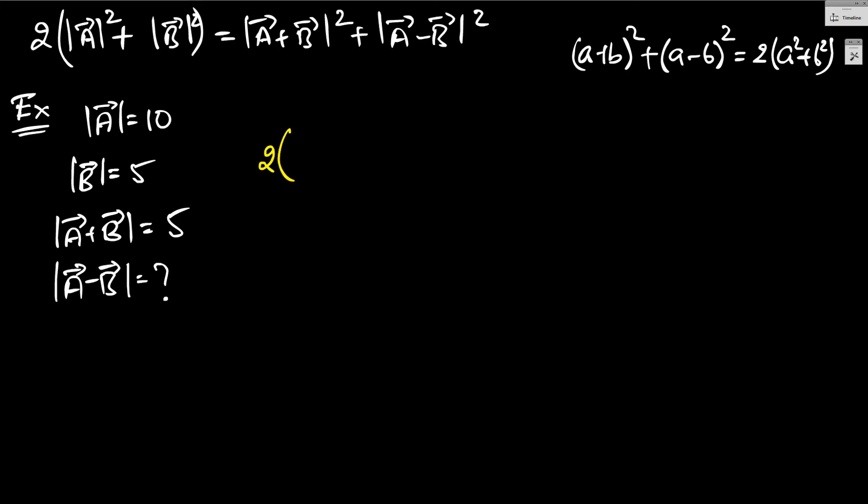So, 2 times magnitude of a square, that is 100, plus magnitude of b square, which is 25, equal to a plus b whole square, 5 square, plus unknown. So, I get 2 times 125, equal to 25, plus x squared. So, x squared is 250 minus 25.